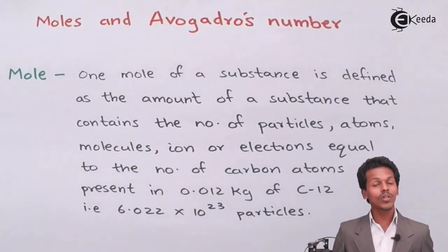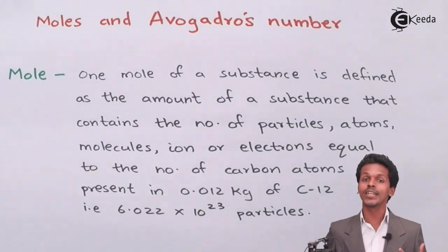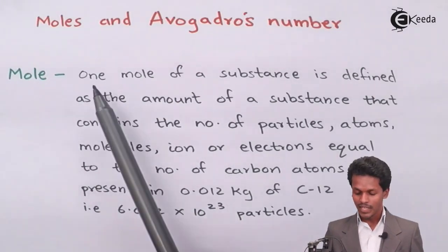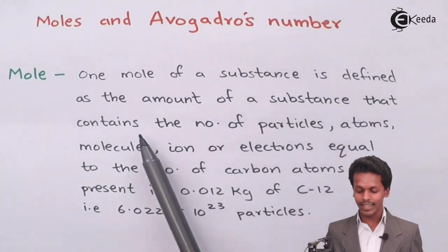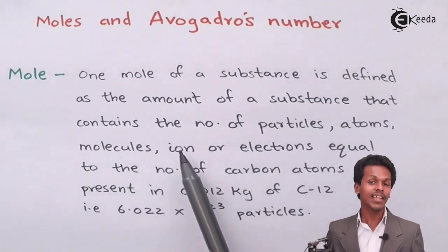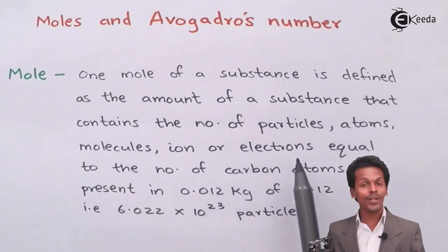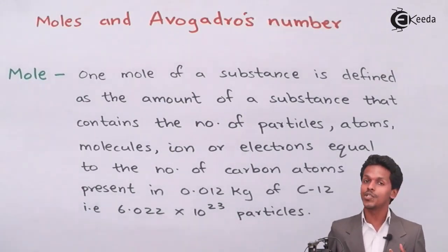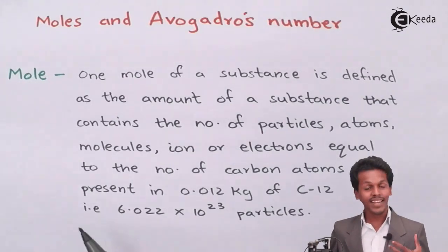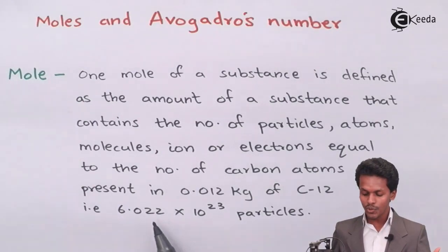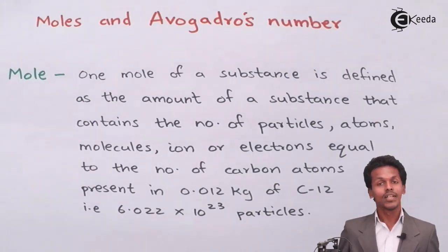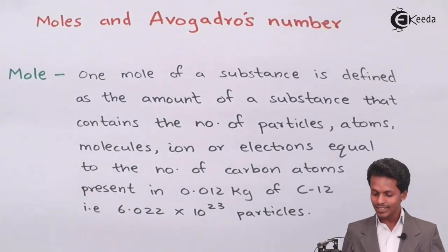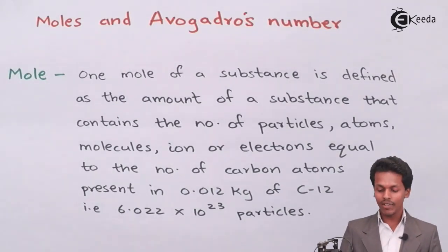As you can see, there is a topic which is based on moles and Avogadro's number. The most important thing is we should understand what a mole actually is. One mole of any substance is defined as the amount of substance that contains a number of particles — which can be atoms, molecules, ions, or electrons — equal to the number of carbon atoms present in 0.012 kg of carbon-12, that is 6.022 × 10²³ particles.